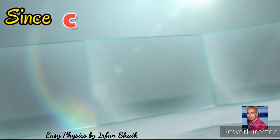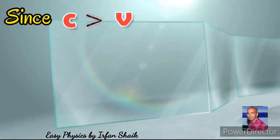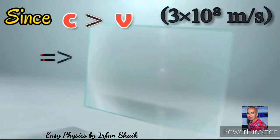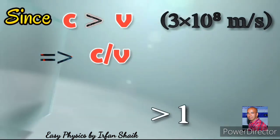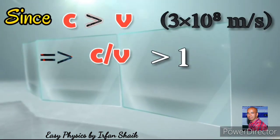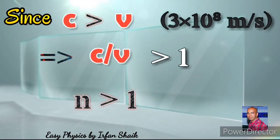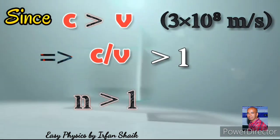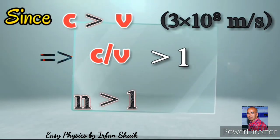So the ratio of c by v is always greater than 1. Therefore, the refractive index n is always greater than 1 for every material.